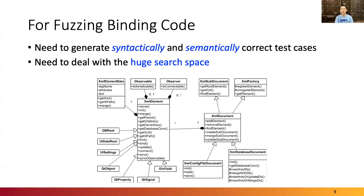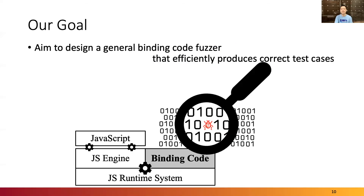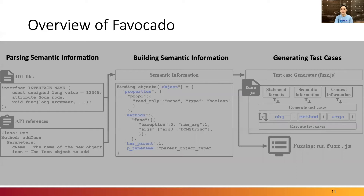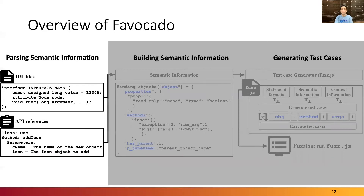Also, we need to deal with the huge input space of binding code because the large input space hinders the effectiveness of fuzzing. In this work, our goal is to design a general and effective binding code fuzzer. Let's first take a look at the overview of Favocado.